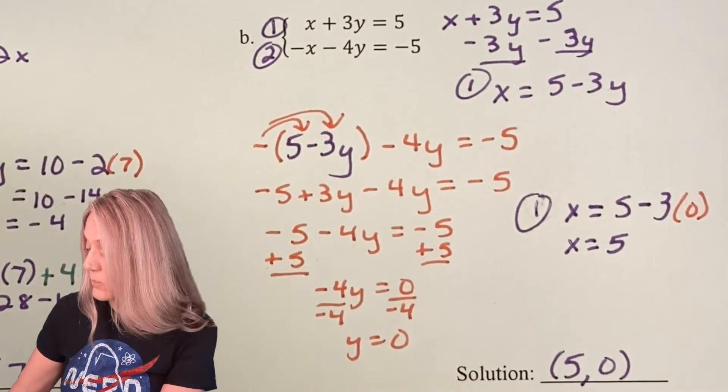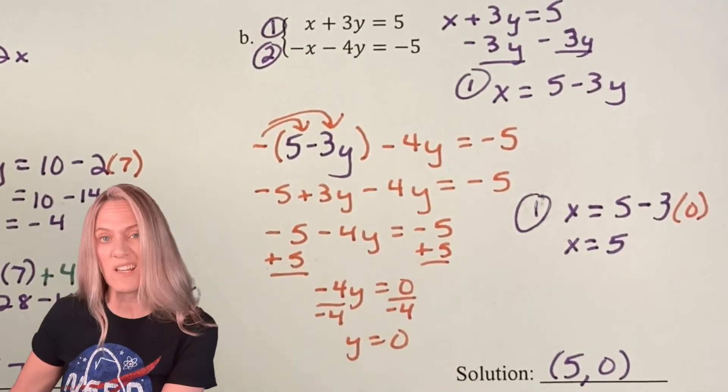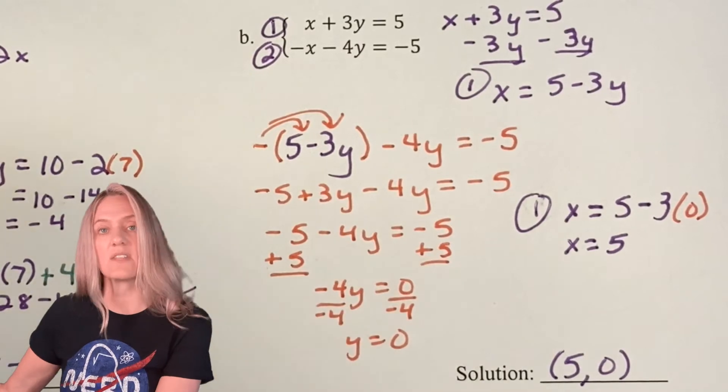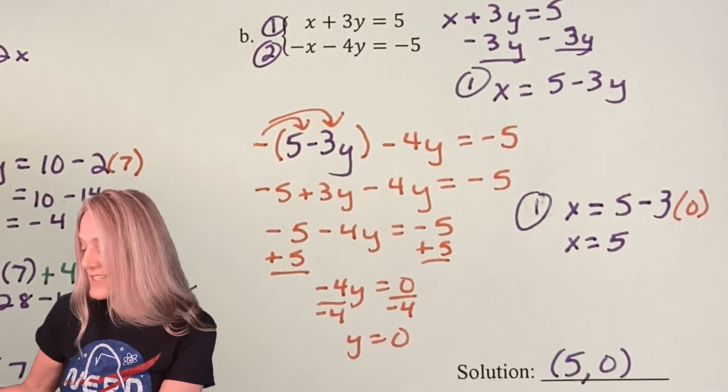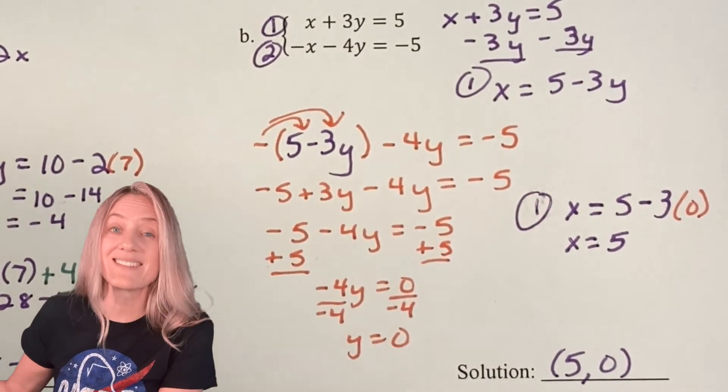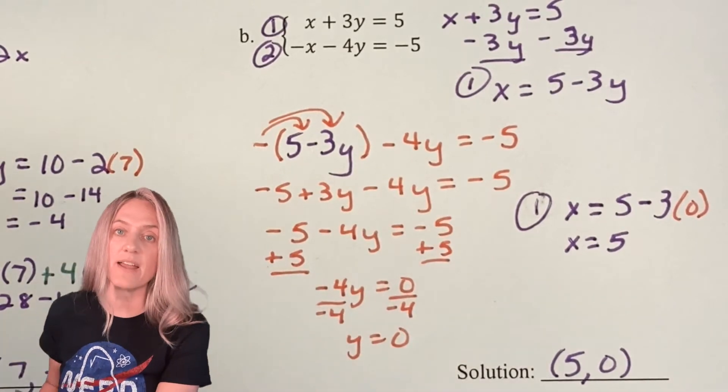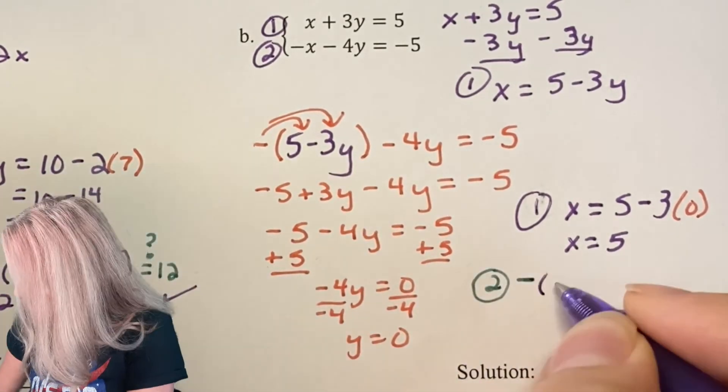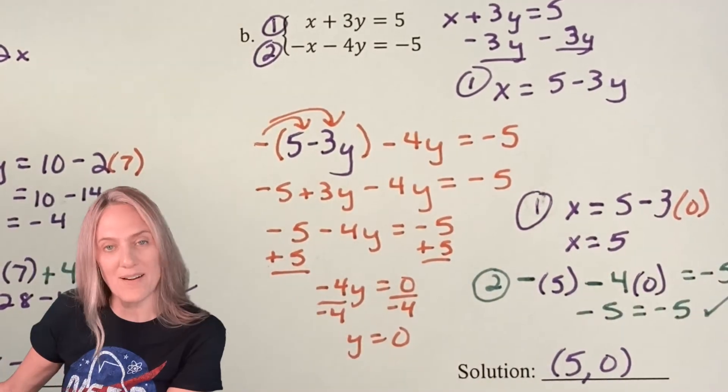Looks like my solution is (5, 0). And I know that works for that first equation because I substituted into the first equation to get the second coordinate. So all I need to do now is check that it works in my second equation. It works.